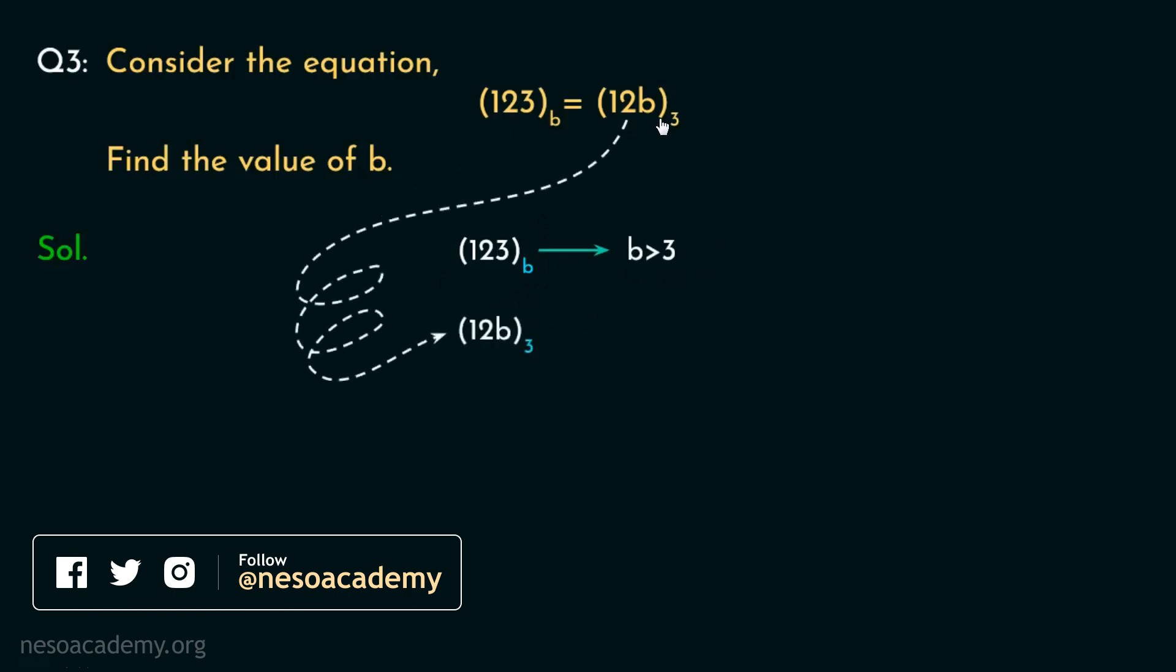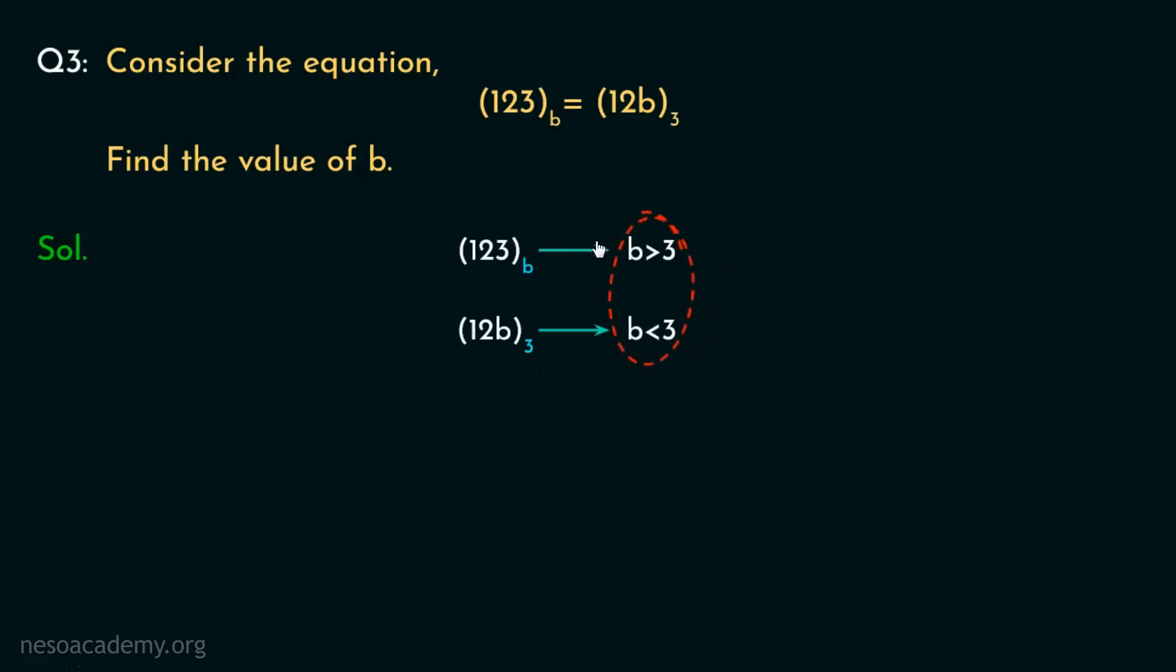Now, coming to the right-hand side, that is (12b) base 3. And from this, we can determine, since for this the base is 3, b should be less than 3. Now, these two conditions are self-contradictory. Aren't they? Well, this means, the value of b is indeterminable.